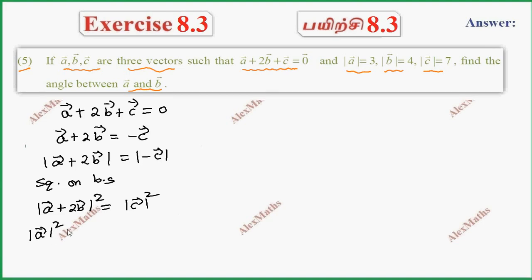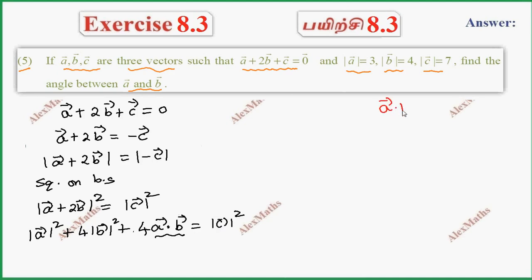Expanding using the formula: mod A squared plus 4 mod B squared plus 2 times A dot 2B. So that gives mod A squared plus 4 mod B squared plus 4 A dot B equals mod C squared. Applying the A dot B formula: A vector dot B vector equals mod A times mod B times cos theta. Substituting this in.